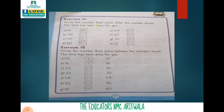Now let's look at Exercise number 14, page number 14: Write the number that comes after the number shown. The first has been done for you. We will write the number that comes after. Like fourteen — after it comes fifteen. Twenty-six — after comes twenty-seven. Forty — after comes forty-one. Fifty — after comes fifty-one. Forty-nine and fifty. Eighty-seven and eighty-eight. Thirty-three and thirty-four. Twenty-one and twenty-two.